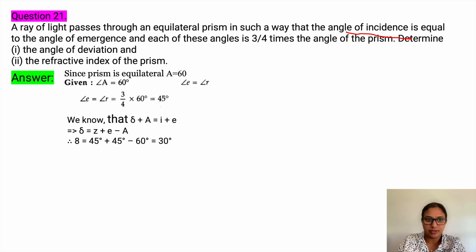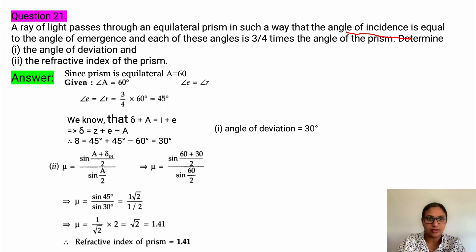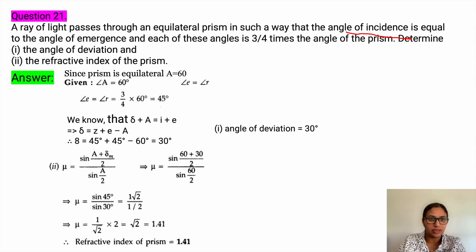Using the equation delta plus A equals i plus e, the angle of deviation can be calculated as 30 degrees. The refractive index of the prism — substituting the values into the formula — you get 1.41.